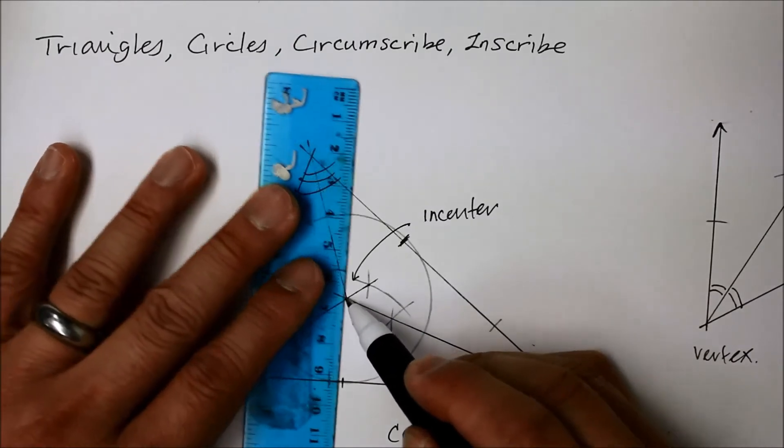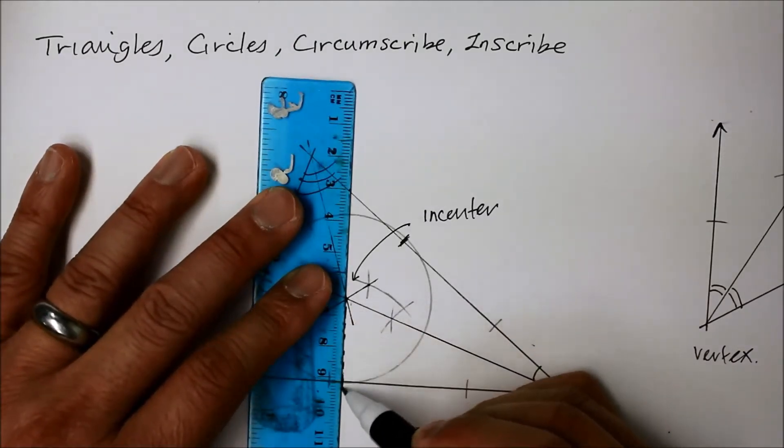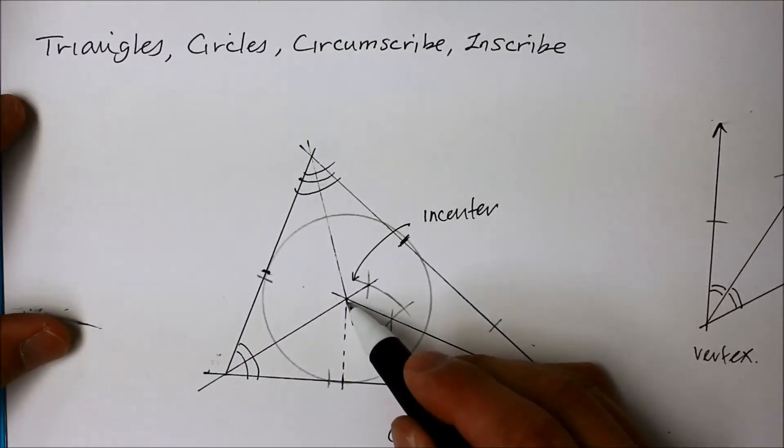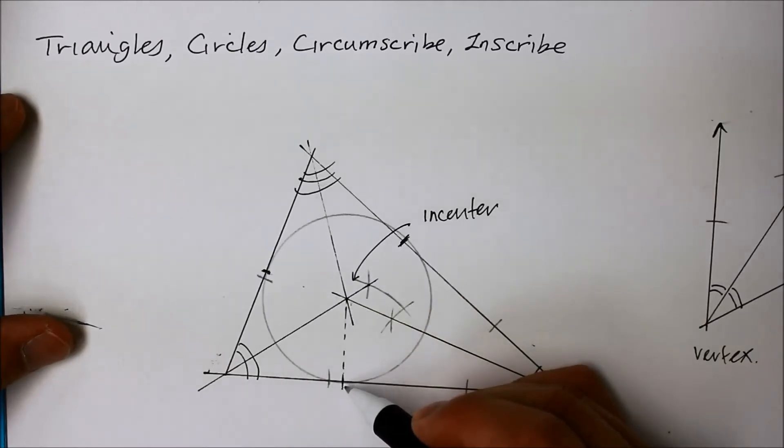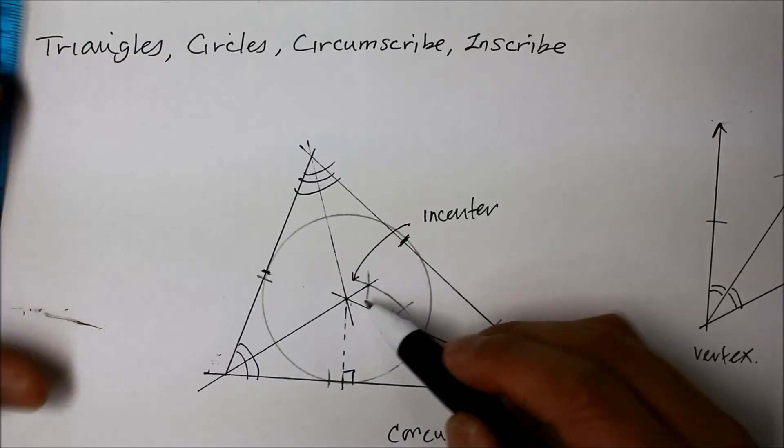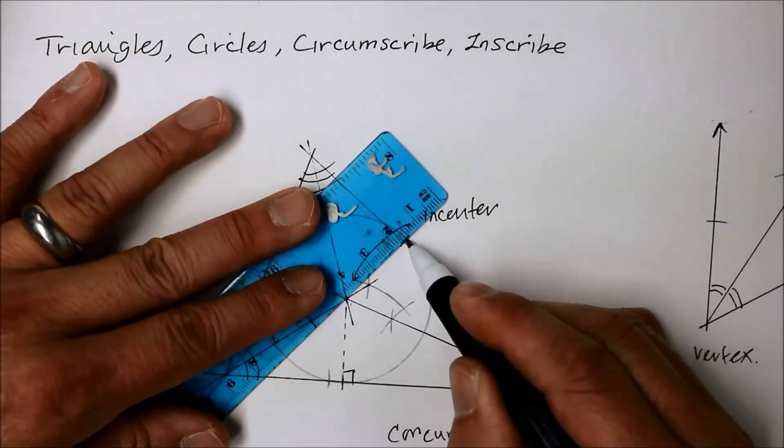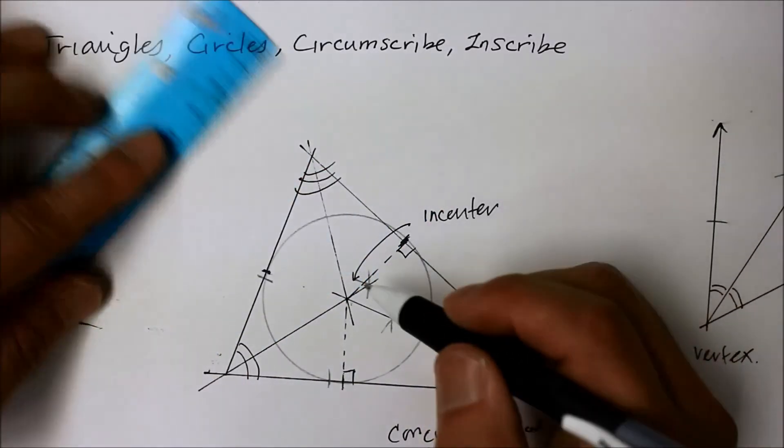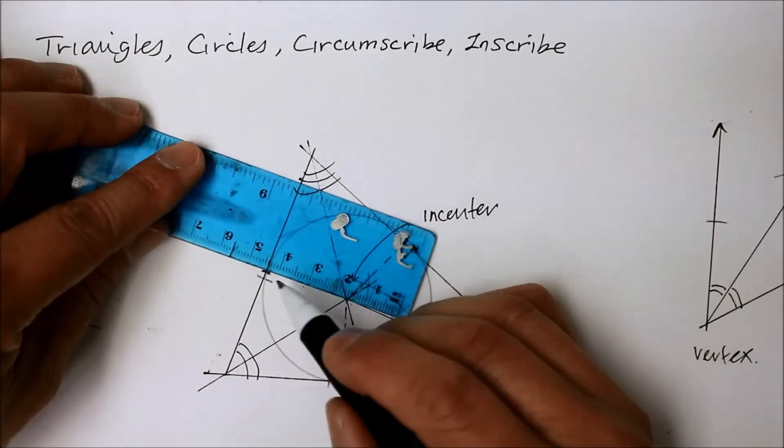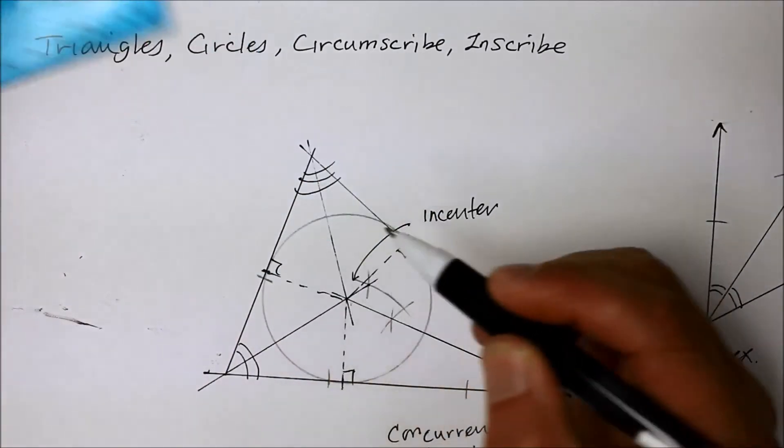And if I were to draw a line, tangent means the line that you draw from the center to the point of intersection of the circumference of a circle is ninety degrees. Same as here. That's perpendicular. And same as there. That's perpendicular.